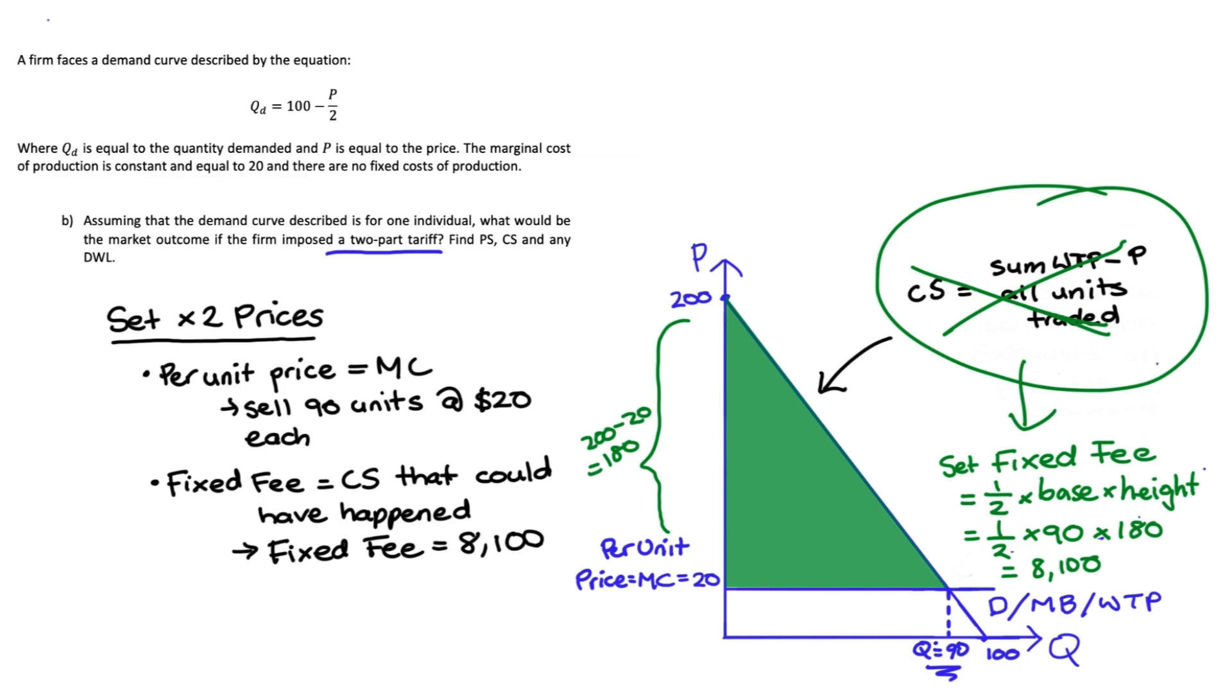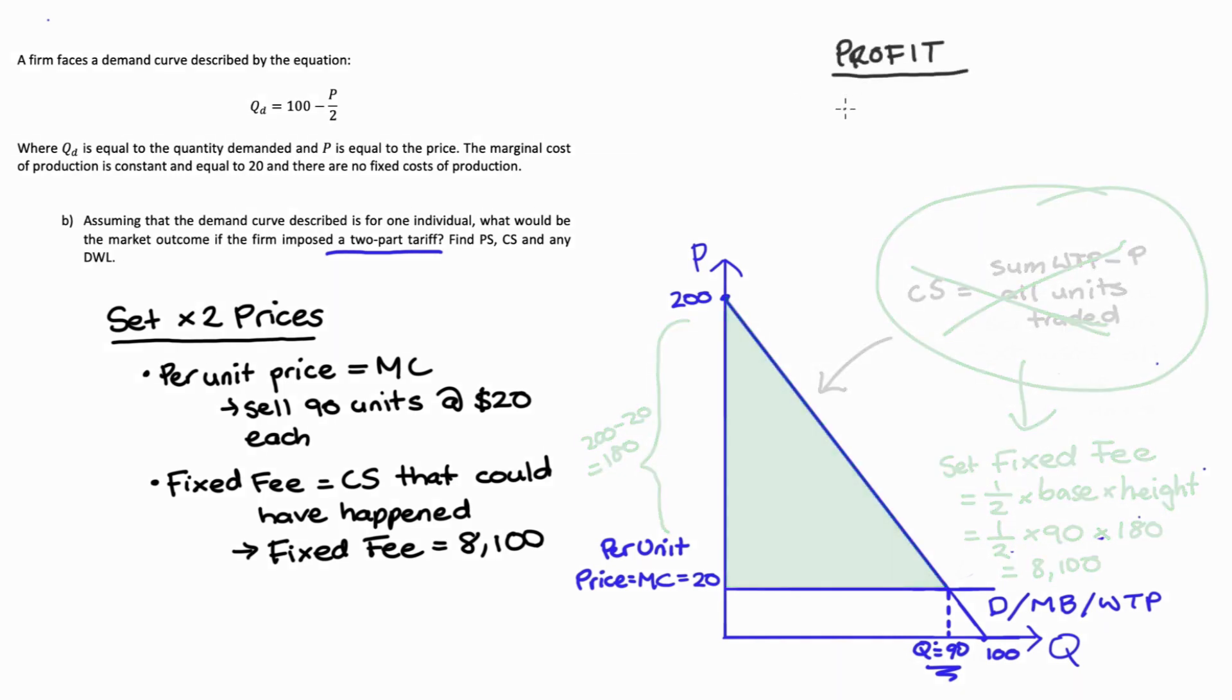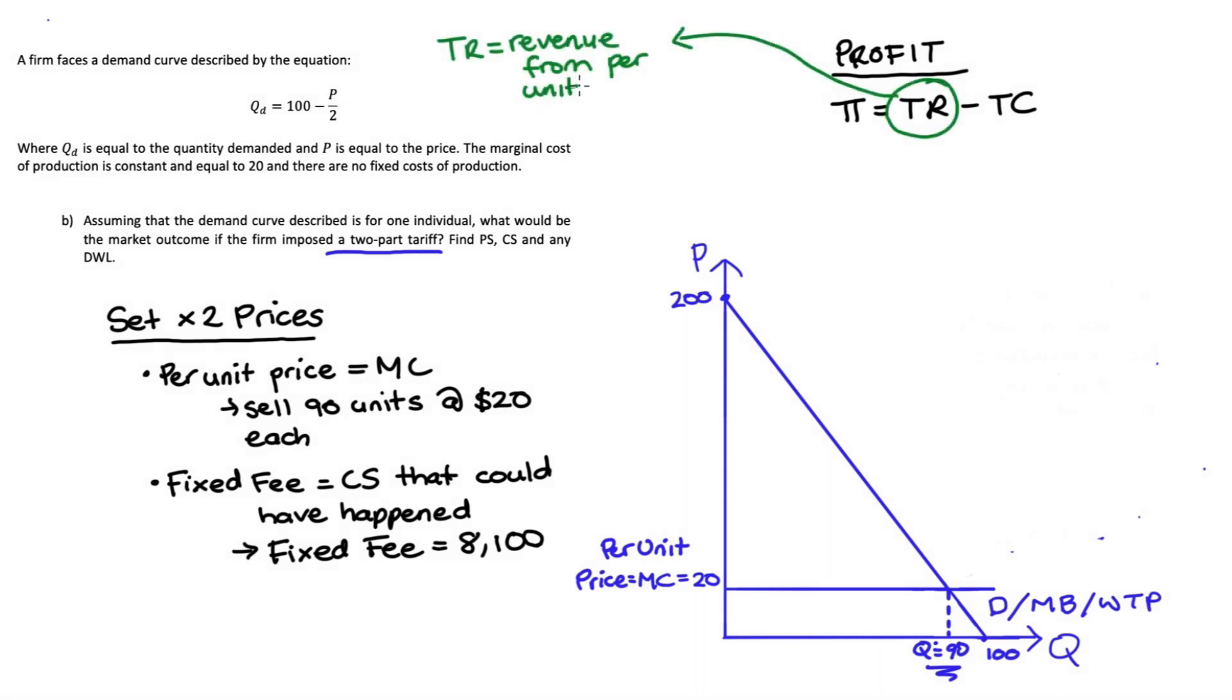In terms of our profit in the market, profit is just total revenue (TR) minus total cost (TC). Now total revenue when we have a two-part tariff will be equal to the revenue from the per unit fee plus the revenue from the fixed fee.